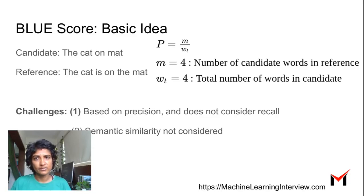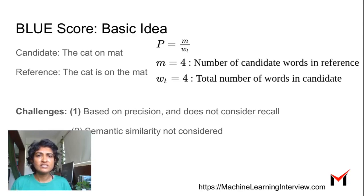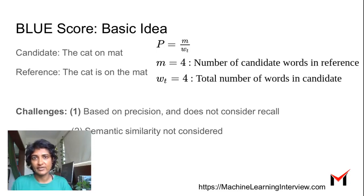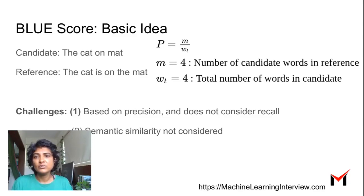The most popular metric for machine translation is BLEU score, which evaluates translation based mostly on precision. For example, if the candidate is 'the cat on mat' and the reference is 'the cat is on the mat,' BLEU counts candidate words that appear in the reference divided by total candidate words — similar to precision for a classifier. A key challenge is that BLEU is very precision-based and does not consider recall — whether all information in the reference is captured in the candidate. Also, semantic similarity is not considered: if the reference says 'the cat is over the mat,' 'on' and 'over' are treated as completely different words.